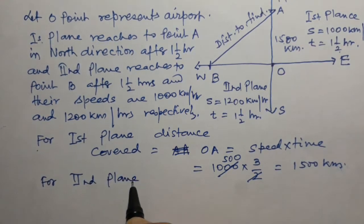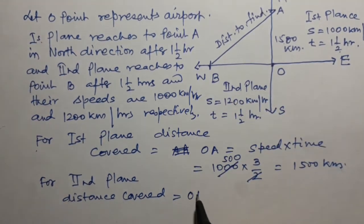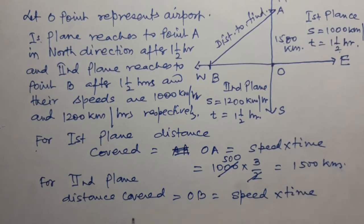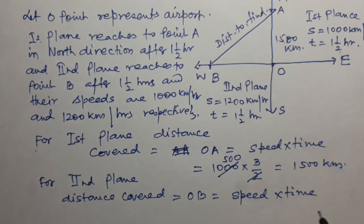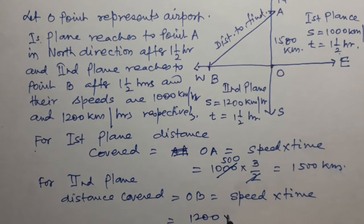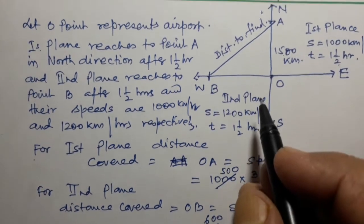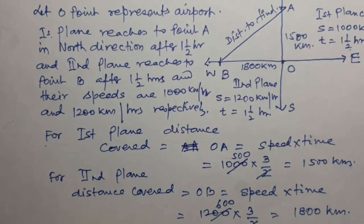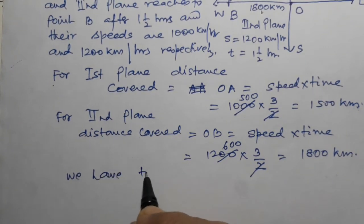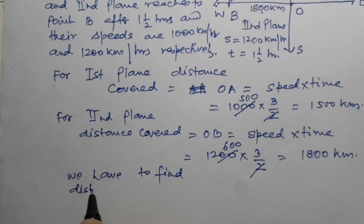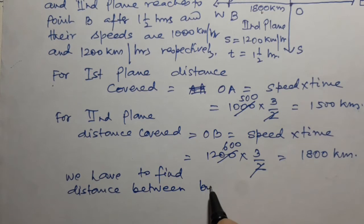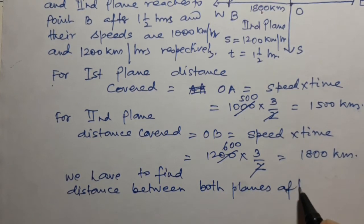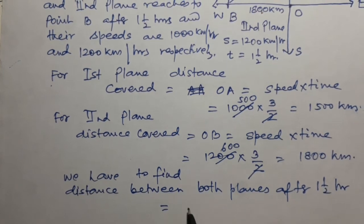For the second plane, distance covered OB = speed × time = 1200 × 3/2 = 1800 km. Now we have to find the distance between both planes after one and a half hours, which is AB.